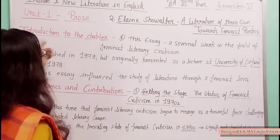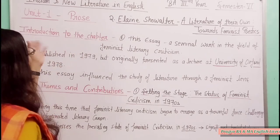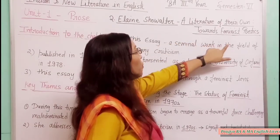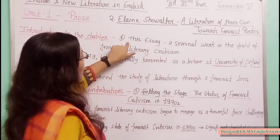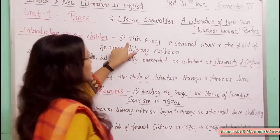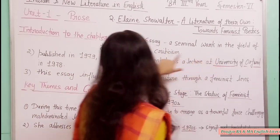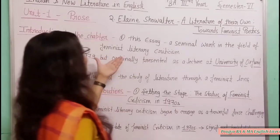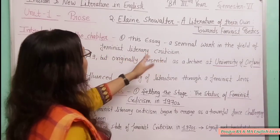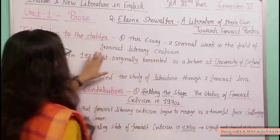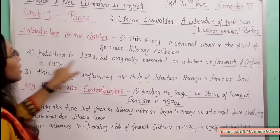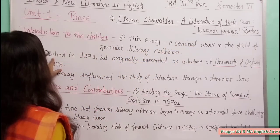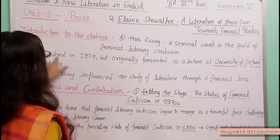Introduction to the chapter. First point: this essay, 'Towards Feminist Poetics,' is a seminal work in the field of feminist literary criticism. It was written by Elaine Showalter and published in 1979.